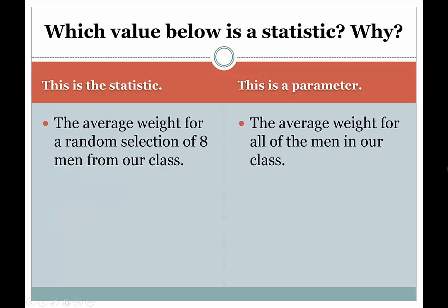So which value below is the statistic and why? We have on the left the average weight for a random selection of eight men from our class, versus the average weight for all of the men in our class. If I'm interested in the weights of males in my class, an average obtained from all the men would be the parameter. The sample statistic is the average weight for a random selection of eight men — we'd call that a sample average or sample mean for the group of eight men.